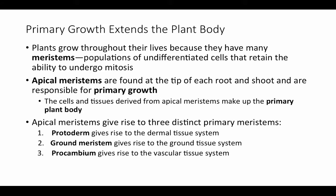Apical meristems give rise to three distinct primary meristems, which in turn give rise to the three major tissue systems in the plant body. Protoderm gives rise to the dermal tissue system. Ground meristem gives rise to the ground tissue system. And procambium gives rise to the vascular tissue system.